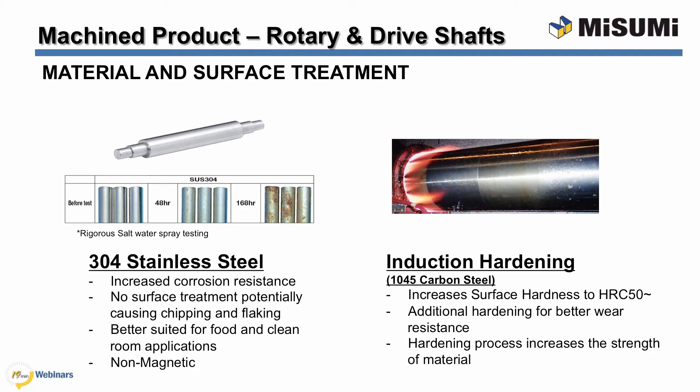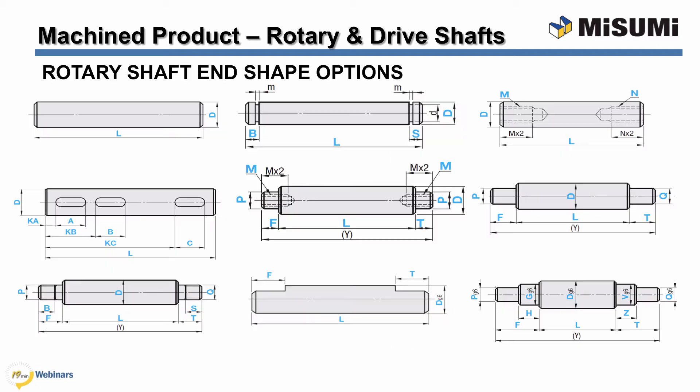For drive shafts, we offer an induction harden option that increases the surface hardness to about 50 Rockwell C for better wear resistance. This process also increases the strength of the material for more demanding applications. Now that you are familiar with Misumi's shaft types, materials, finishes, and basic fit selection process, you can take advantage of our unique business model to select the exact shaft you need.